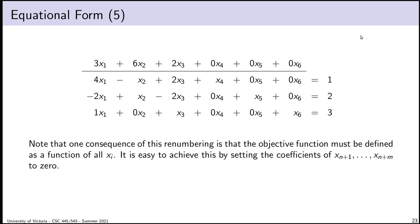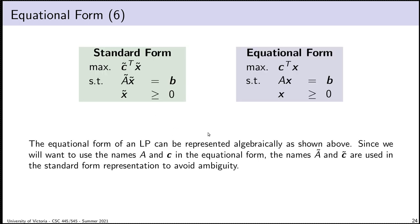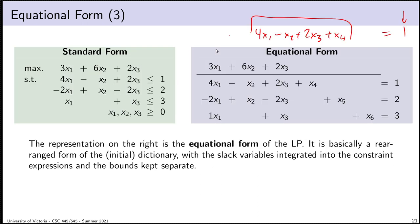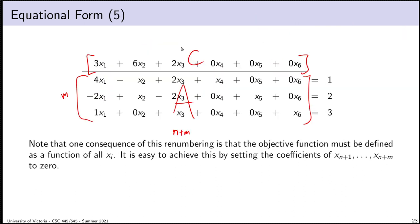Since all variables are variables in equational form, they all have to be treated equally in the objective function too. I extend my objective function to include a zero coefficient for all the slack variables. As a result, I end up with an objective expression with n plus m variables, and if I pull out the coefficients of all the linear combinations in the constraints, I get a matrix with m rows and n plus m columns.